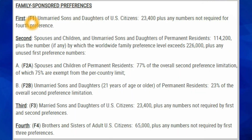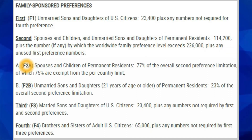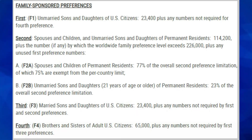We're going to cover family-sponsored preferences: F1, F2, F3, and F4 categories. F1 is unmarried sons and daughters of US citizens. F2A is spouses and children of permanent residents, and F2B is unmarried sons and daughters of permanent residents. F3 is married sons and daughters of US citizens, and F4 is brothers and sisters of adult US citizens.